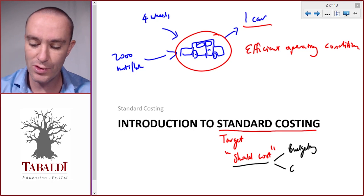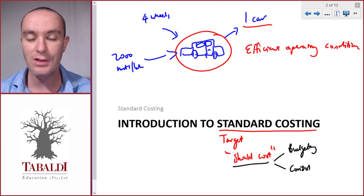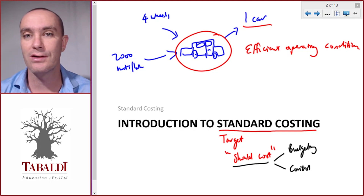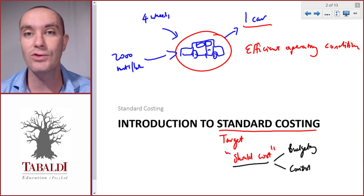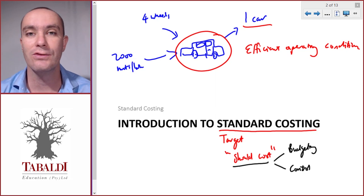Standard costing can also be used for cost control. If we know it should cost us 50,000 to make a car and it actually costs us 52,000, then we know something is wrong and we need to fix it.